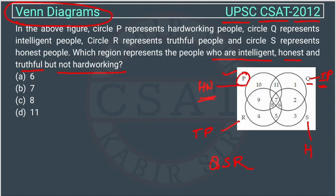We remove circle P since we do not want anything from it. After removing it, the numbers remaining should be in all three circles Q, S, and R. The only number that is in all three circles is 6 — it is in circle Q, circle S, and circle R. So the answer is 6, and option A is the correct answer.